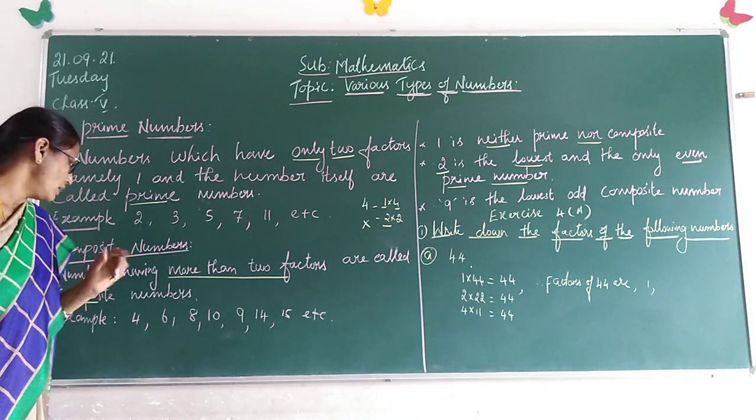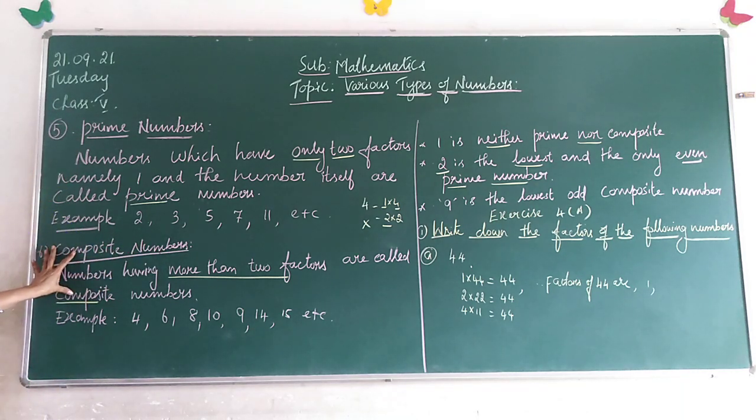Now, composite numbers. Children, numbers having more than two factors are called composite numbers.